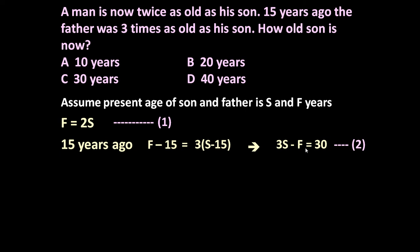So just simplify this equation. We will get 3S minus F is equal to 30. This is equation number 2. So now we are having two equations: equation number 1 and equation number 2.